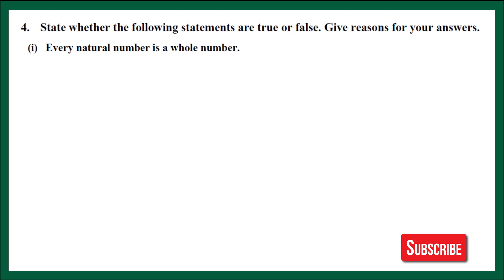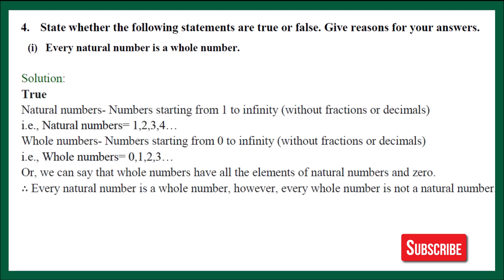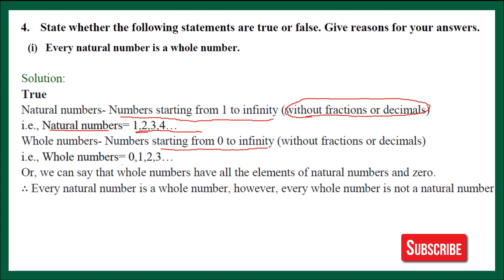Part 1: Every natural number is a whole number. Let's verify this from their definitions. Natural numbers are numbers starting from 1 to infinity, without fractions or decimals — complete numbers. Whole numbers are numbers starting from 0 to infinity, complete numbers. Comparing the two, all natural numbers — 1, 2, 3, 4 and so on up to infinity — are present in the family of whole numbers. So, every natural number is a whole number. This statement is true.